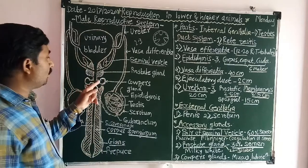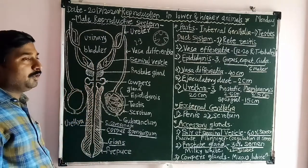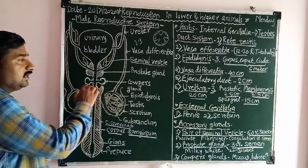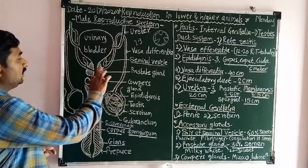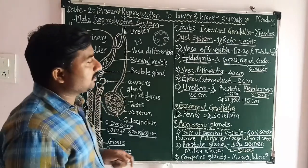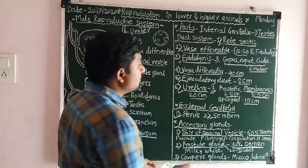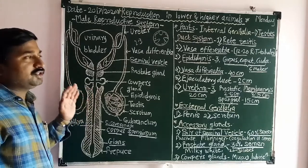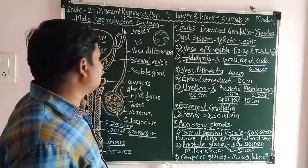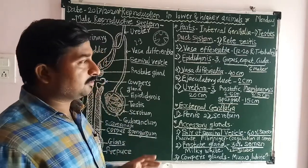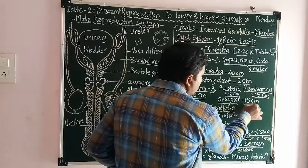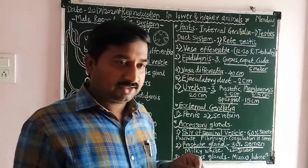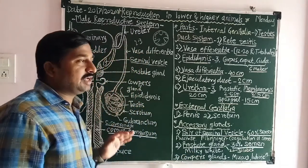The second part is the membranous urethra, also about 2.5 centimeters in length, on which the Cowper's or bulbourethral glands are present, located between the prostatic urethra and the root of the penis. The third part is the spongy (penile) urethra, which is totally covered by the penis and is about 15 centimeters in length, opening at the tip of the penis.